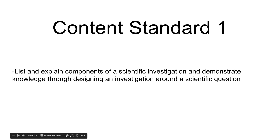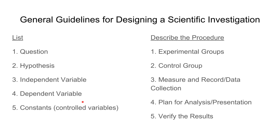Here we are looking at content standard one — it's the first assessment of the year. We're planning a scientific investigation, and there are specific things I want you to be able to list that should be part of it. Then you're actually going to do the design. These are the 10 things I'm looking for when I assess: what is the question, what is the hypothesis, what are the variables, and when you write out your step-by-step procedure, these are the specific things I'm looking for in your steps.